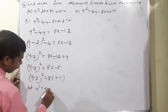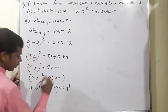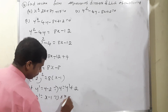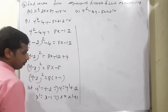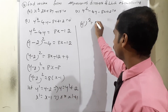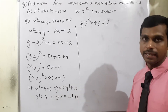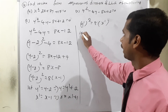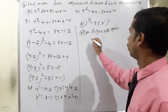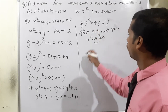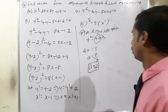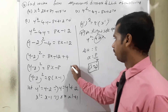Let y' = y - 2 and x' = x - 1, so y = y' + 2 and x = x' + 1. Substituting: y'² = 8x'. This matches y² = 4ax, which is a right side open parabola. Therefore 4a = 8, so a = 2.